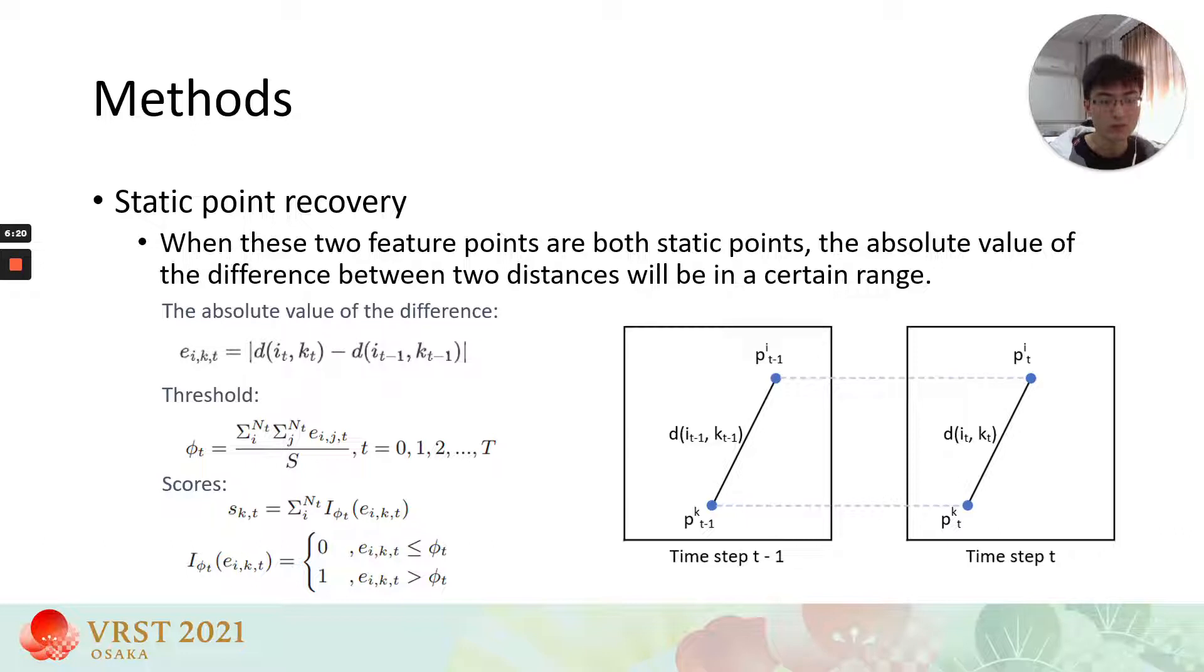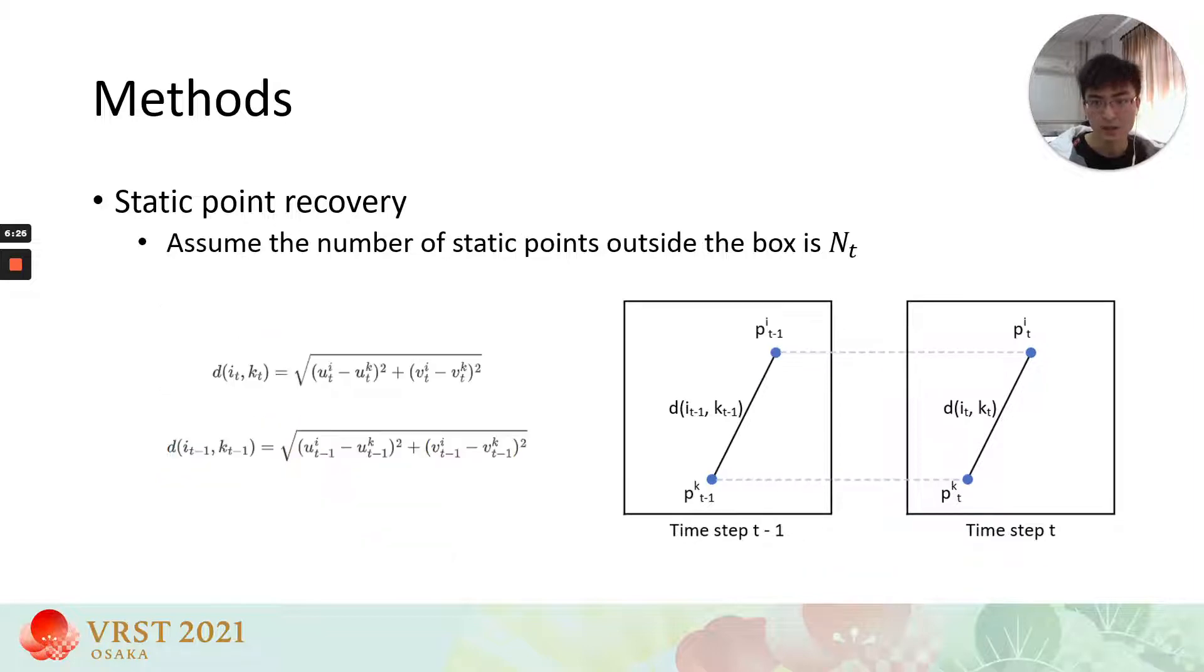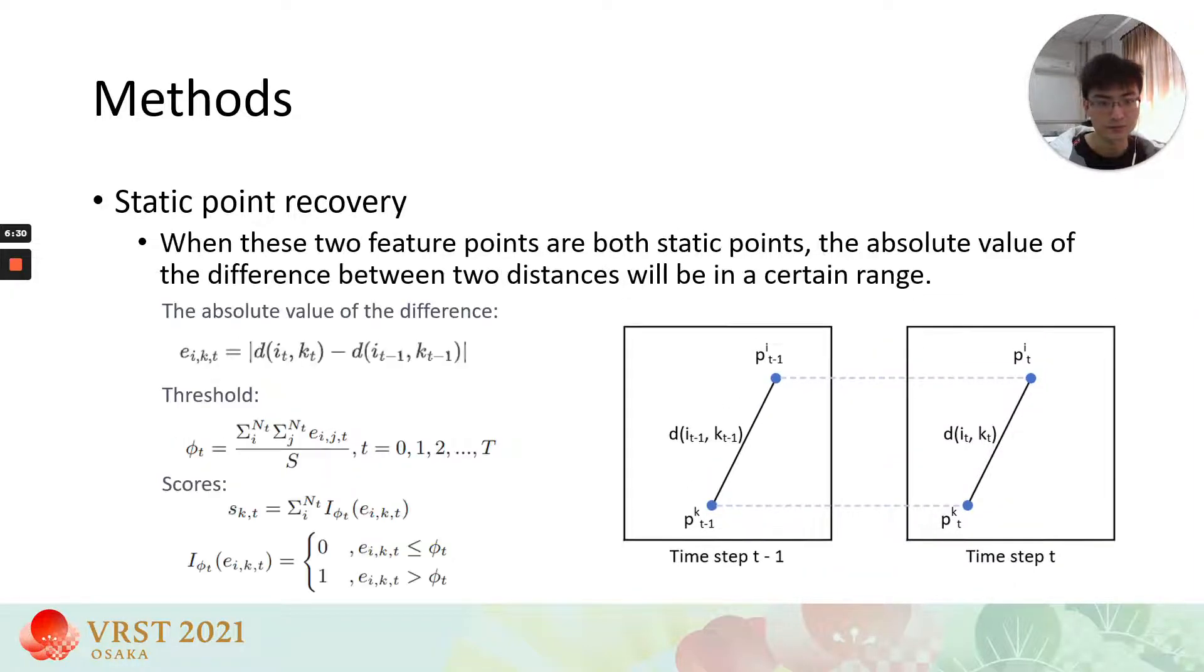If the score of point k is more than half of nt, nt is the number of static points outside the box, we will regard it as a dynamic point and remove it. Otherwise, we keep the point as a static point.